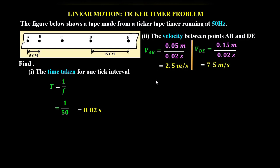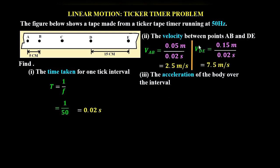For part three, we need to determine the acceleration of the body over the interval. Since the body is accelerating, V_DE is the final velocity — it is higher than the initial velocity. So V_DE is the final velocity and V_AB is the initial velocity. Acceleration is given as final velocity minus initial velocity over time.